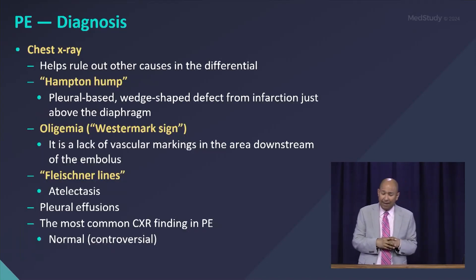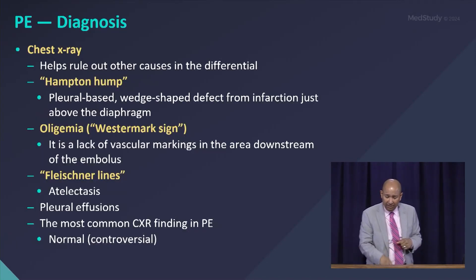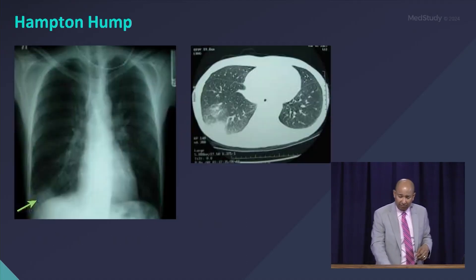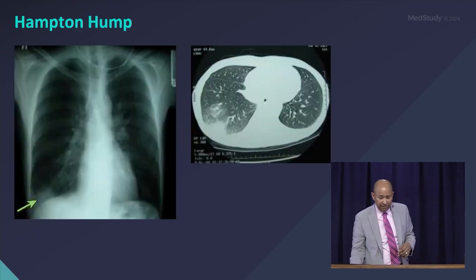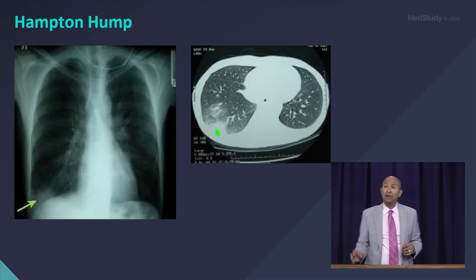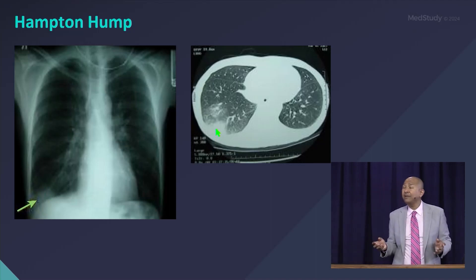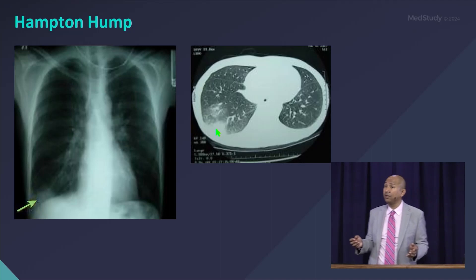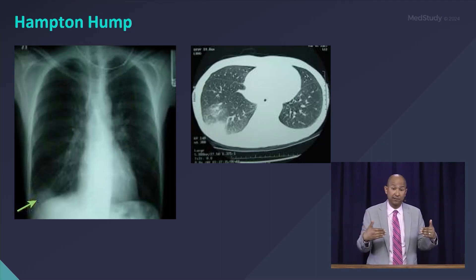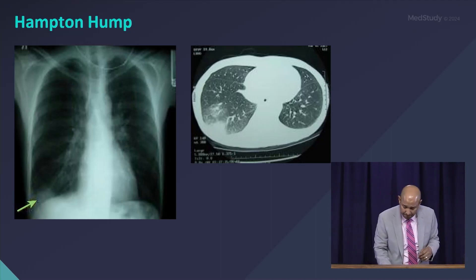Remember those memorized names — Hampton's Hump. Here's a wedge-like infarct on a chest X-ray, and here it is on CT. It's very difficult to infarct the lung because the lung has a dual blood supply, so it's very hard to infarct the lung in these cases.